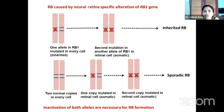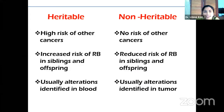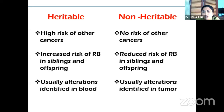We all know that retinoblastoma is caused by the neural retina-specific alteration of the RB1 gene and inactivation of both alleles is necessary for retinoblastoma formation. Tumors can be caused by genetic aberrations but all patients need not inherit the disease. Tumors need not be inherited in all cases by the next generation. In the heritable entity, there is a high risk of other cancers, increased risk of retinoblastoma in siblings and offspring, and alterations are often identified in blood. Whereas in the non-heritable entity, there is no risk of other cancers, reduced risk in siblings and offspring, and alterations are identified only in the tumor.